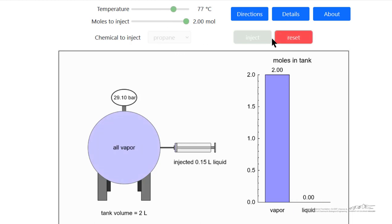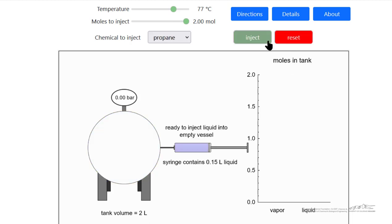At high enough temperature, again, all vapor. Reset back to our initial conditions of injection. It's important to remember here that the pressure in the tank is always at saturation pressure if we have two phases, or it's lower than saturation pressure.